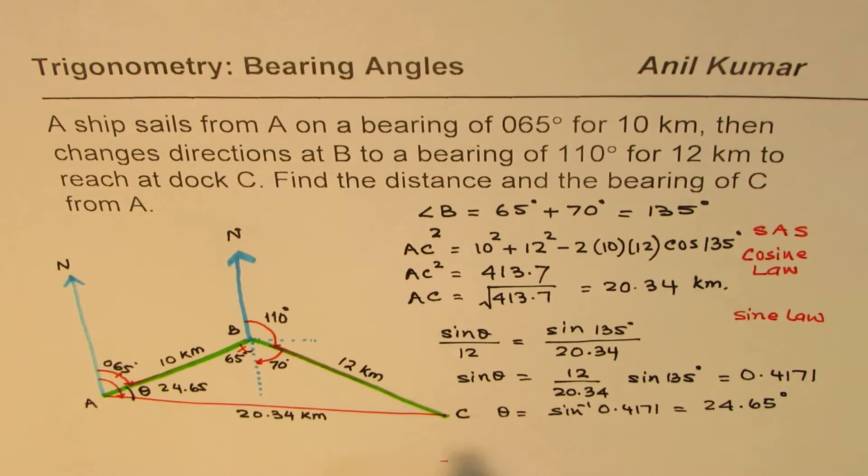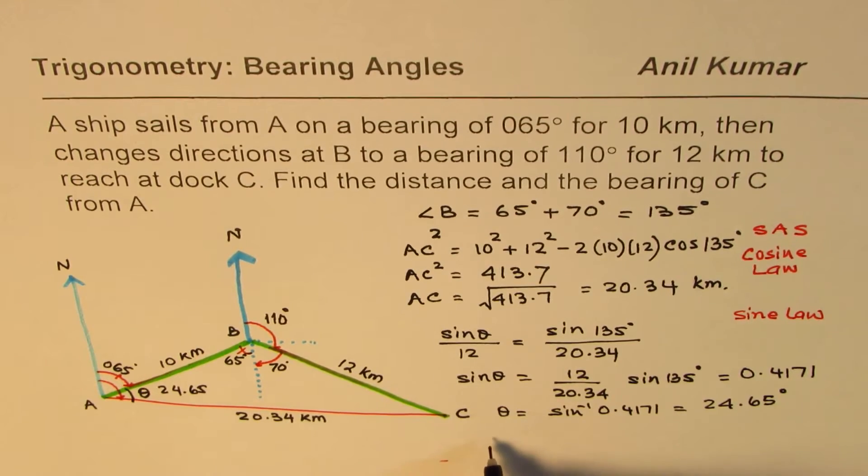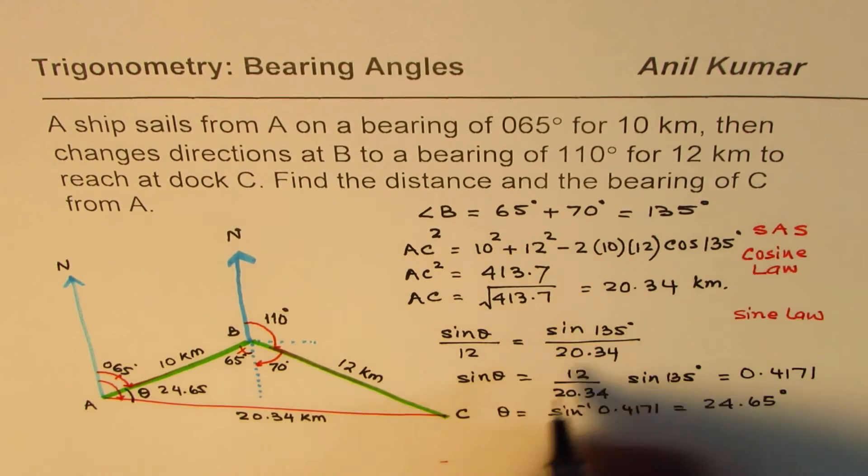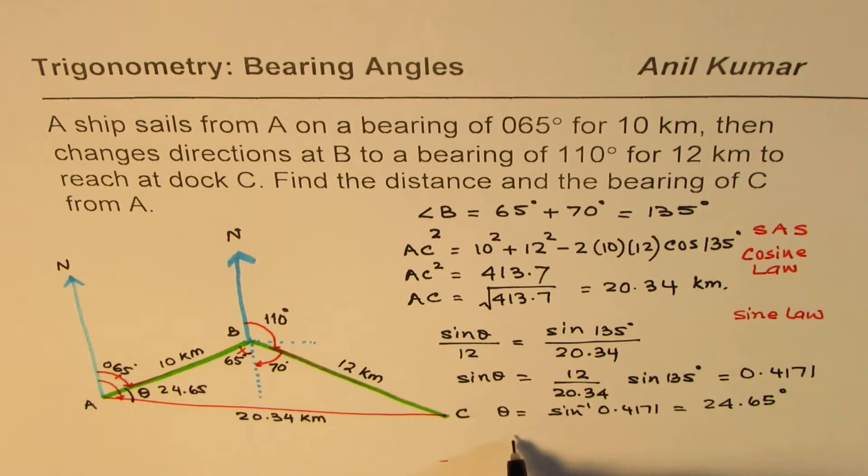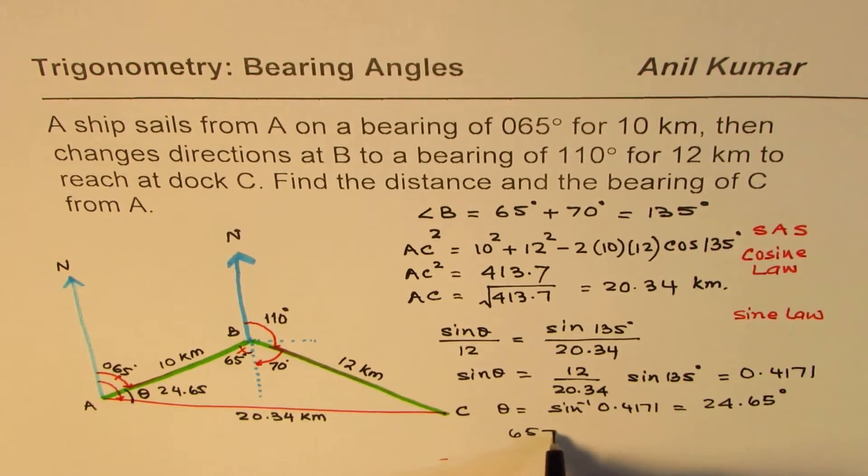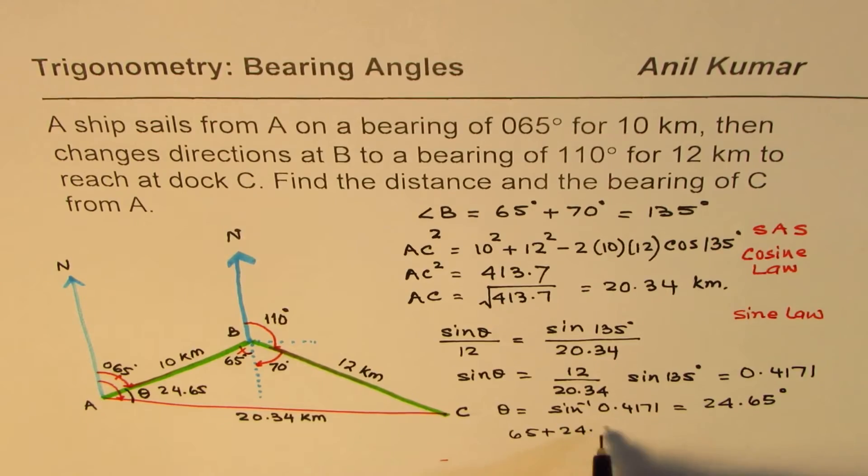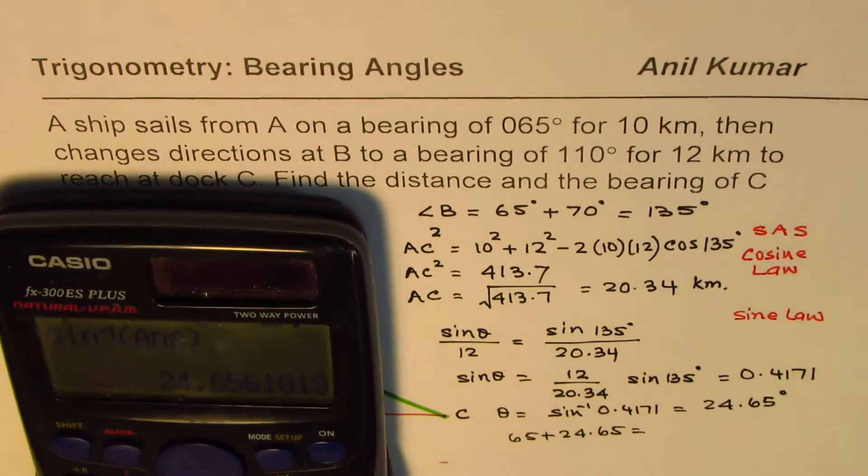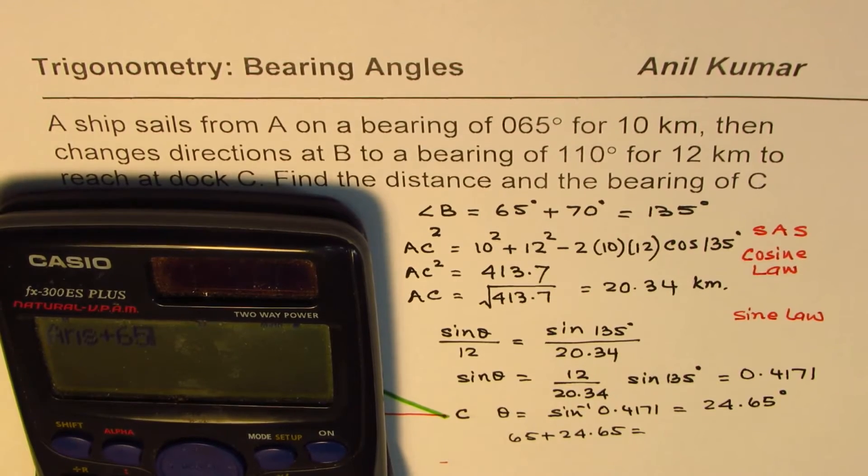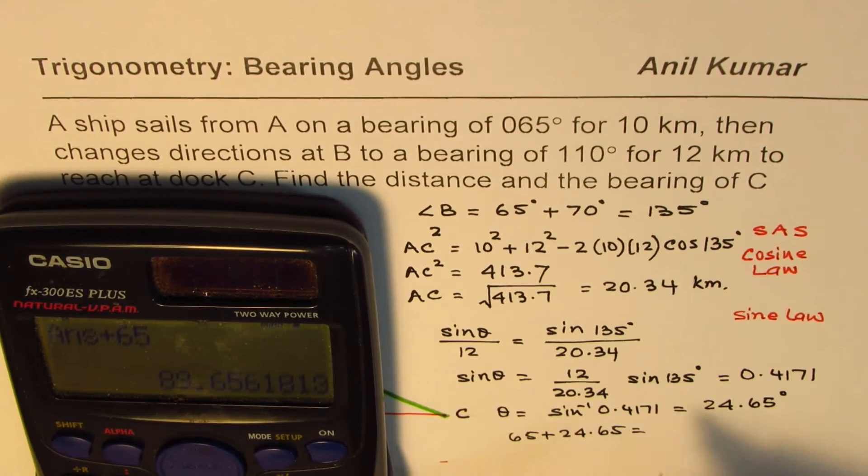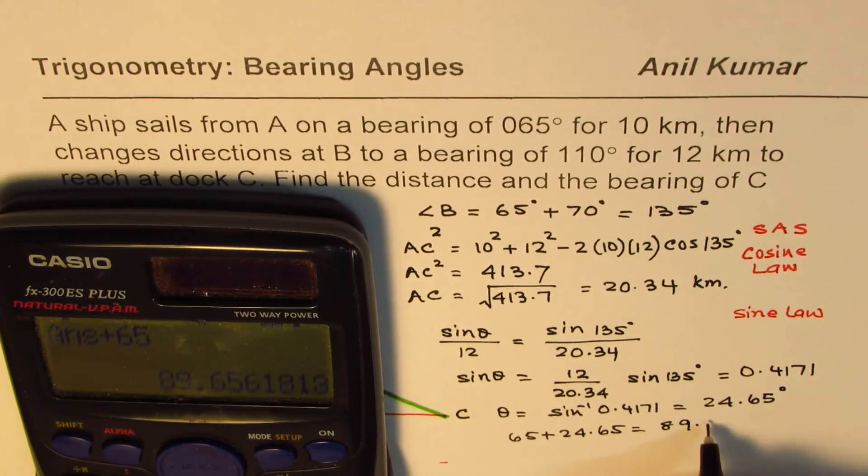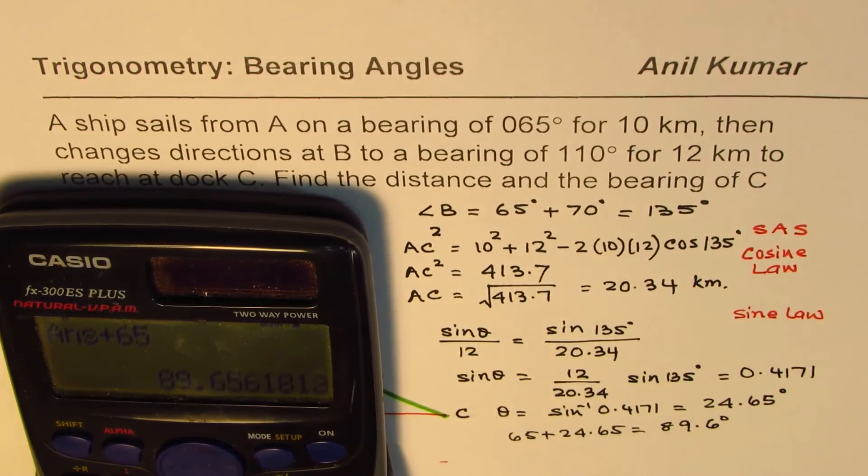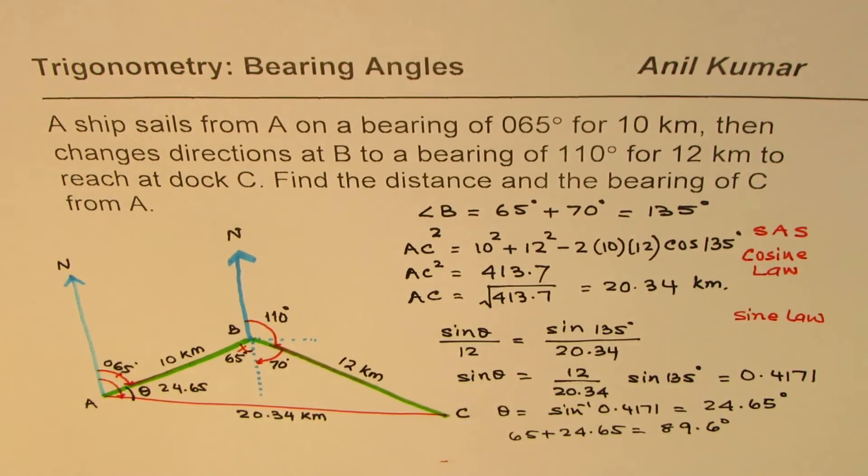Now, what is the angle, the bearing angle from A to C? So the bearing angle is the sum of these two. So the bearing angle will be 65 plus 24.65. So let's calculate this. So we'll just add 65 to this, plus 65 is equal to 89.6 degrees. So that is the bearing angle.